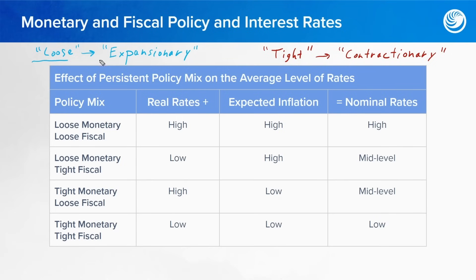Loose just means the same thing as expansionary, whereas tight means the same thing as contractionary. So loose basically means a boost. If you're talking about loose monetary policy, that would mean that they are likely dropping short-term interest rates, which makes it cheaper for people to borrow, which encourages investment.